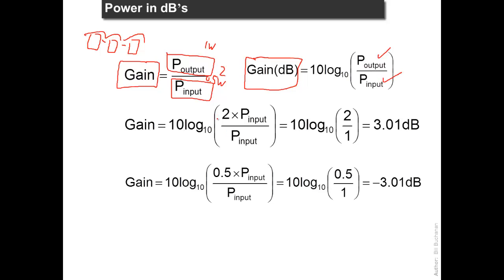So we take two simple examples and these are good examples. If we double the power then we take the log to the base 10 of 2 and multiply it by 10 and we get 3 dB. 3 dB is a double of power. So if you find an amplifier with a 3 dB gain it means it doubles the power. Half the power is 0.5 times the input power. And that gives us minus 3 dB.